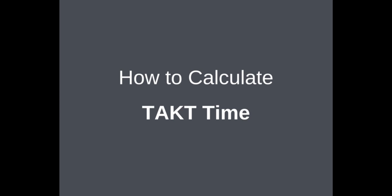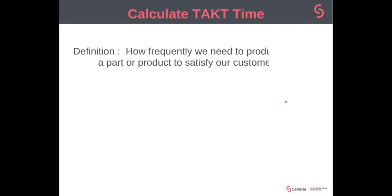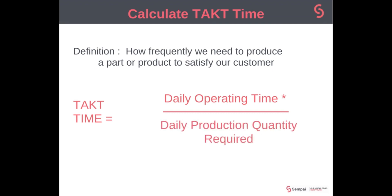So how to calculate TAC time with a worked example. You can see here that we've got a definition of TAC time and a calculation below. It's how frequently we need to produce a part or product to satisfy our customer, and that's calculated by dividing your daily operating time — your net available time — by your daily production quantity required, the daily demand from the customer.